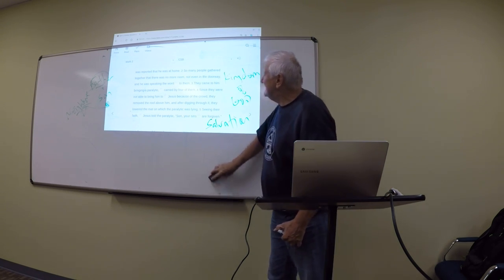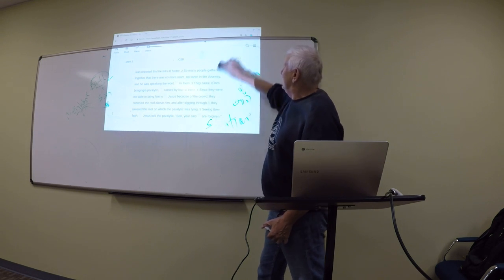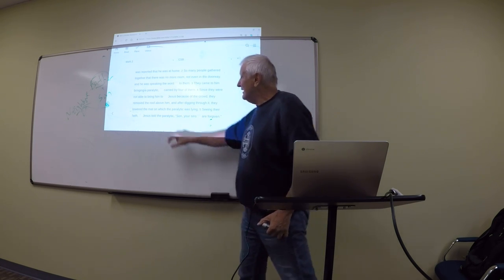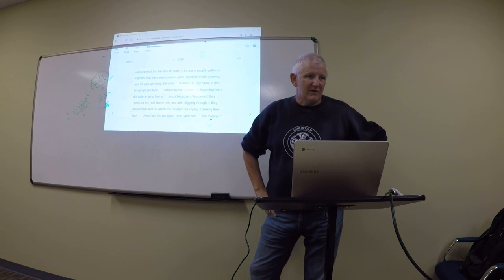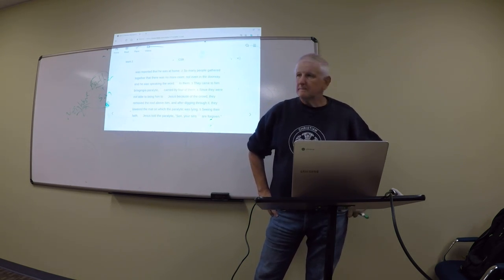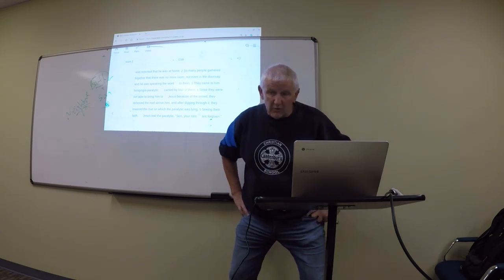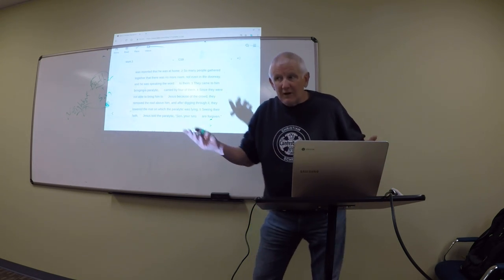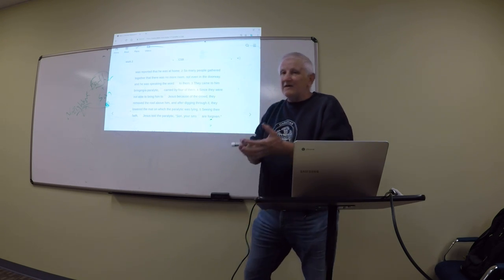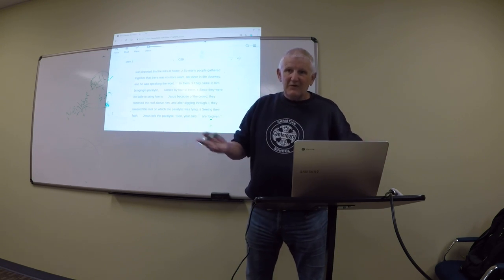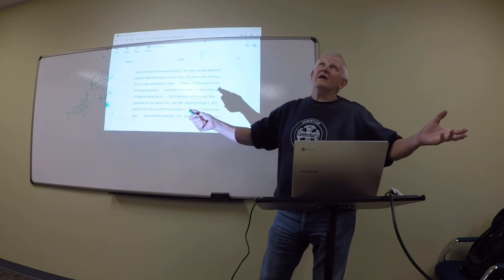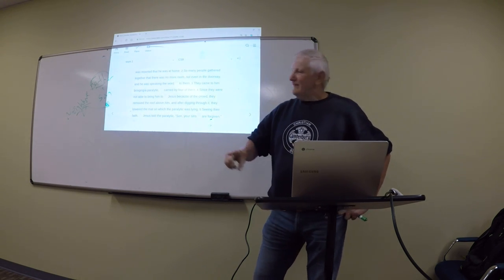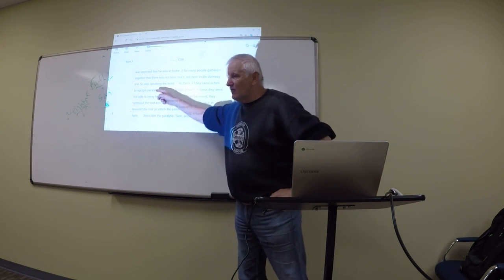They came to him. Some people came to him bringing a paralytic. What is a paralytic? What is a paralytic? A person who cannot walk. Disability people. Disability people. A person who cannot move. He is, we call him a vegetable. We call him a vegetable. He says, I cannot move, help me. And some friends brought the paralytic. There are four friends carrying the paralytic.